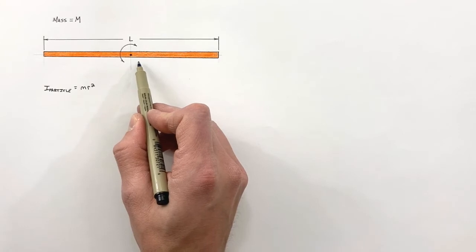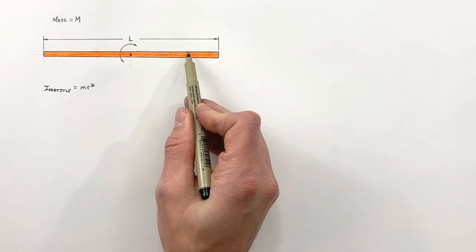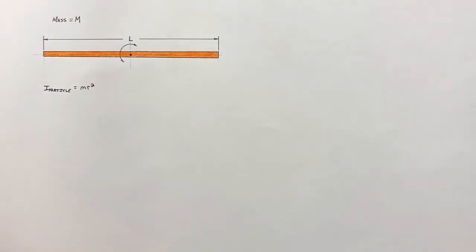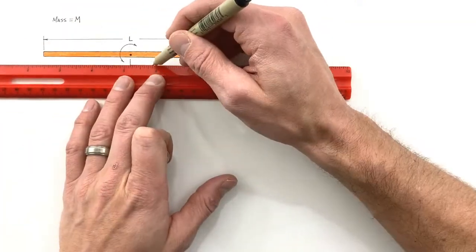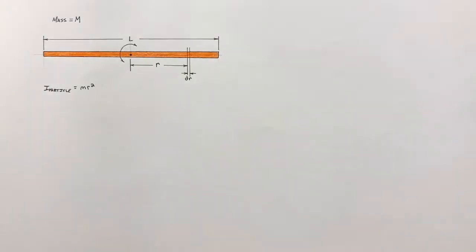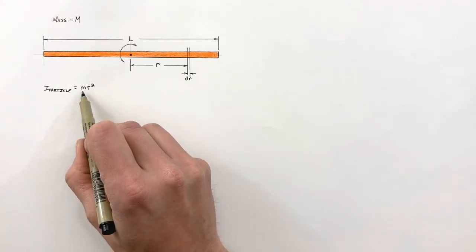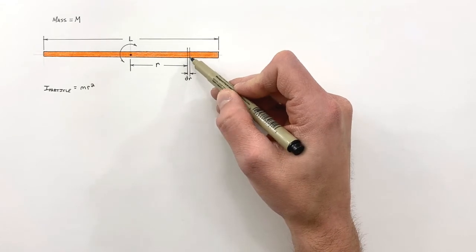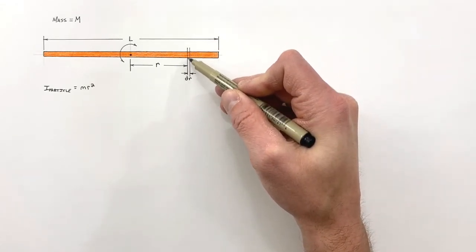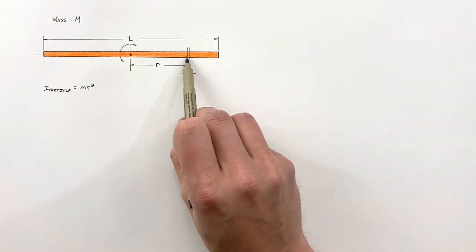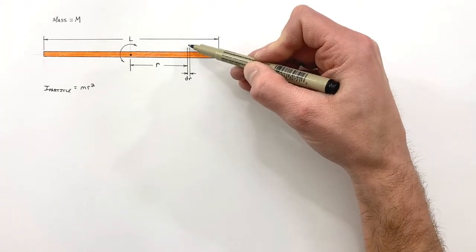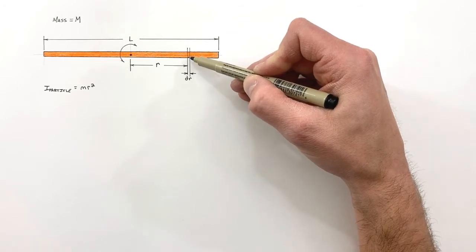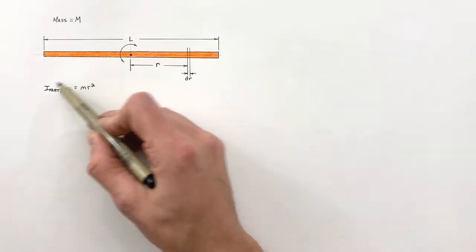To solve this problem, we're going to slice this rod into an infinite number of slices and look first at a single slice somewhere along this rod, viewing that slice as a single particle at a single radius. When looking at the inertia equation for a particle, the entire mass must be at a single radius. If we take an infinitely thin slice, all of that mass would be at a single radius, and we can treat it as a particle.